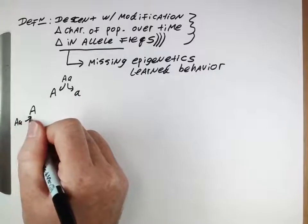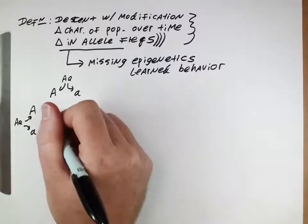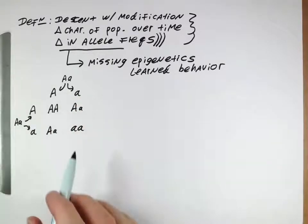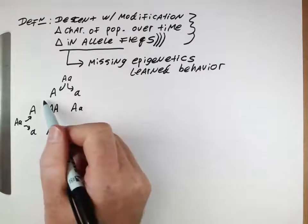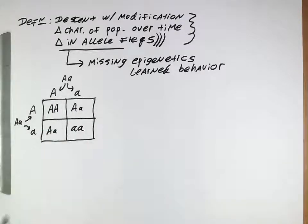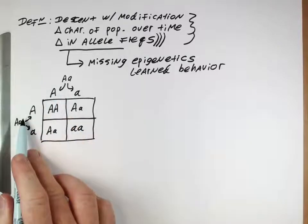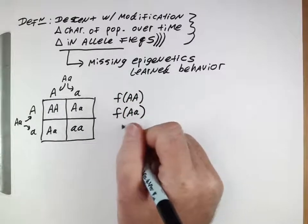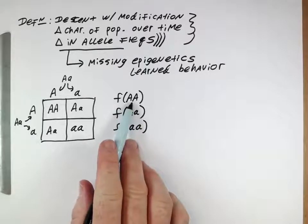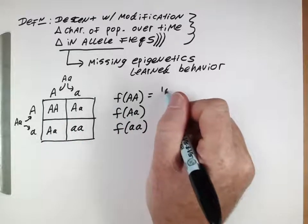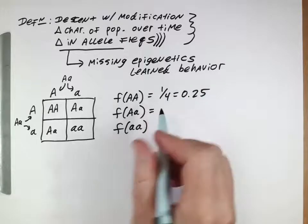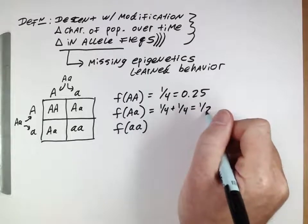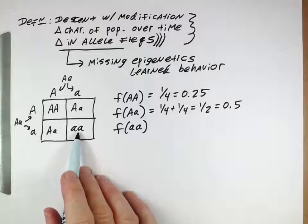If this heterozygous individual makes two different types of gametes, and this heterozygous individual also makes two different types of gametes, then the possible offspring they produce are: this homozygote, this heterozygote, this heterozygote, and this homozygote. You've seen this before — it's the Punnett square. If these two individuals mate and have a large number of offspring, the frequency of the capital A homozygote is 1 out of 4, the frequency of the heterozygote is 2 out of 4 (50%), and the frequency of the lowercase a homozygote is also 1 out of 4.